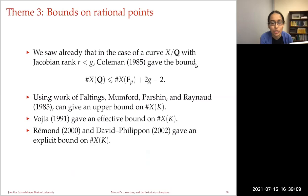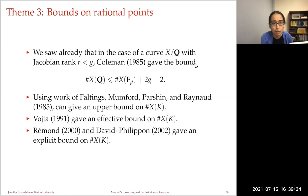For the last theme — studying bounds on the number of rational points — we saw that for a curve over Q with Jacobian rank less than g, Coleman gave a bound: the number of rational points is bounded by the number of F_p rational points plus 2g minus 2. Around that time, using work of Faltings, Mumford, Parshin, and Raynaud, one can also give an upper bound on the number of k-rational points. Vojta and Bombieri also gave bounds using techniques from Diophantine approximation.